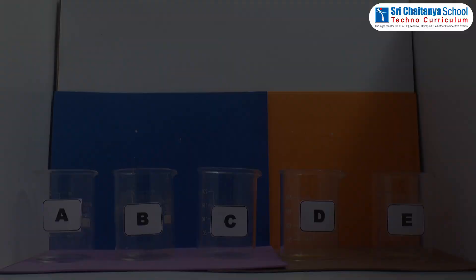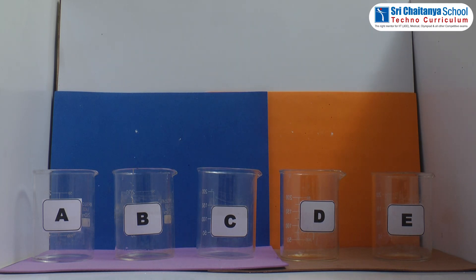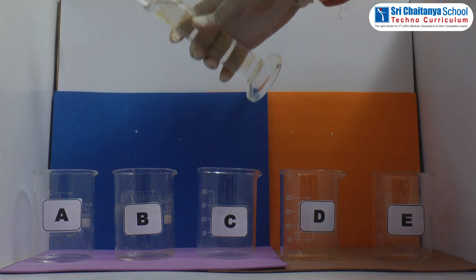Now it is time to see the procedure. Take five beakers and label them as A, B, C, D, and E. Fill each one of them up to half level with water.